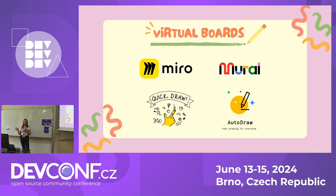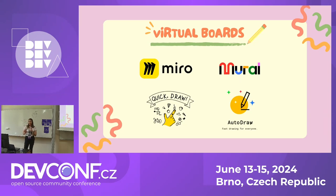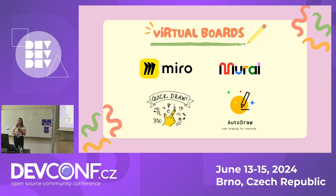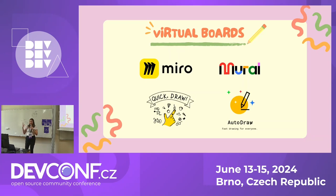The virtual boards you can use are Miro, Mural, AutoDraw, or Quick Draw. Miro and Mural are really similar — you can find playful templates to use as icebreakers with your team. AutoDraw uses artificial intelligence: when you draw something, it shows you the closest matching image, like a face, egg, heart, or whatever. Quick Draw is an application by Google where you try to draw something it tells you — I'll show it on a slide later.